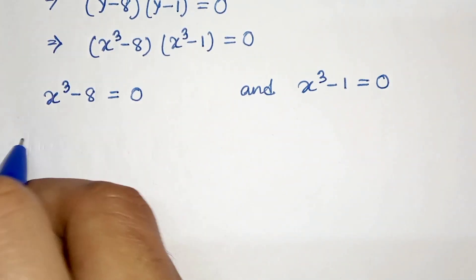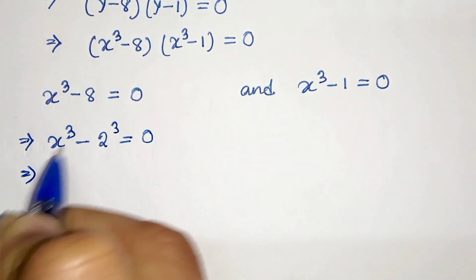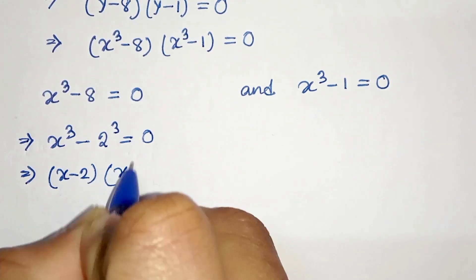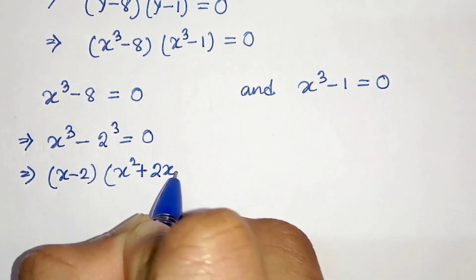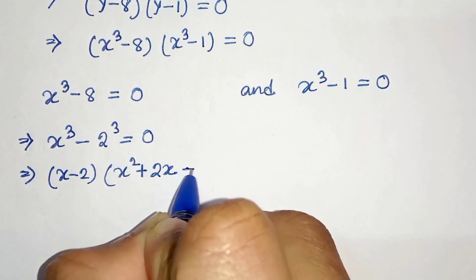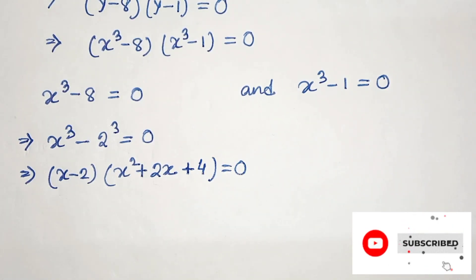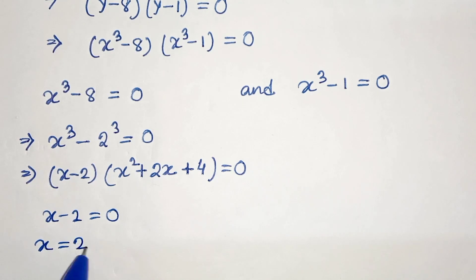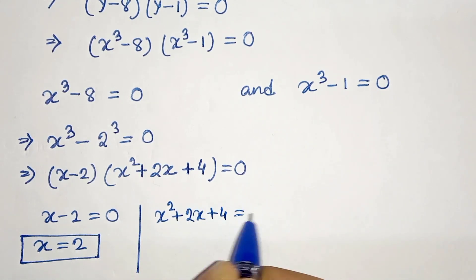Now let's simplify. x cubed minus 8 can be written as x cubed minus 2 cubed equals to 0. This is a difference of cubes, a cubed minus b cubed, which factors as a minus b times a squared plus ab plus b squared. So we get x minus 2 times x squared plus 2x plus 4 equals to 0. From this, x minus 2 equals to 0, which gives x equals to 2. This is our first solution.